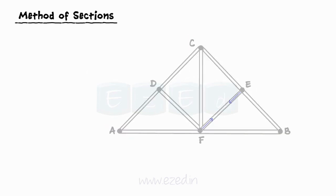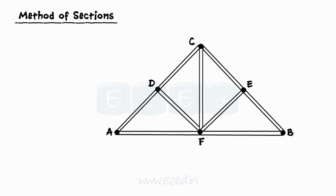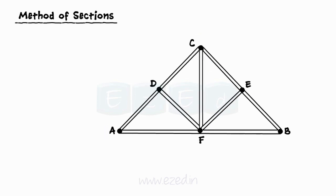Hence, method of sections is preferred for analysis of few members, whereas for analysis of the entire truss, method of joints is suited.